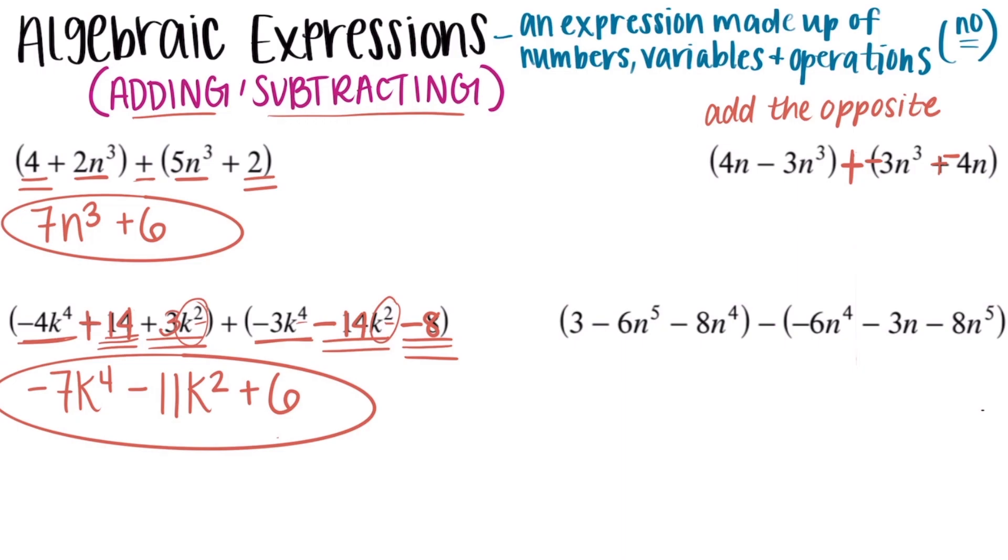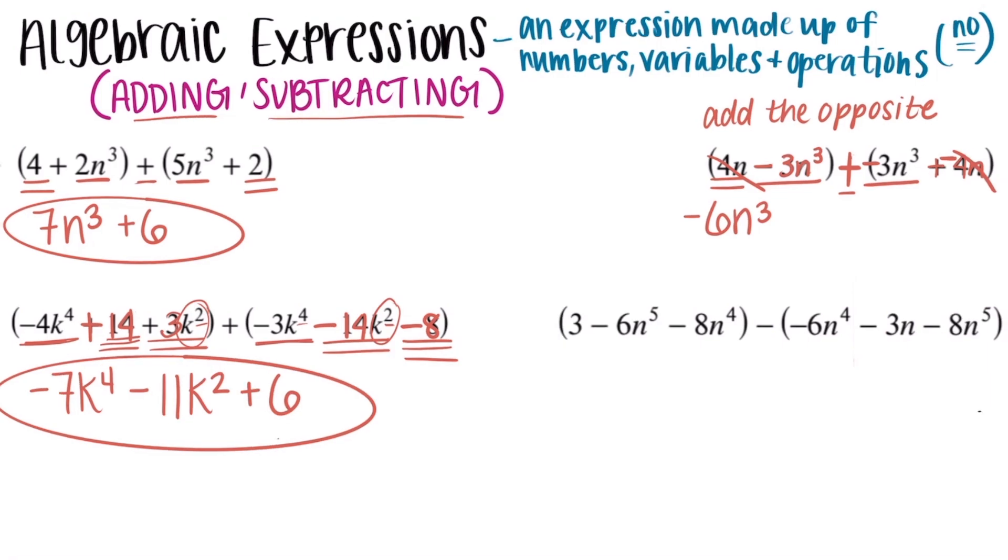Then from here, we just do it exactly like how we did those last two. We combine our like terms. So we have a negative 3n to the third plus a negative 3n to the third. So combining two negatives, you're going to add those up. Negative 3 plus negative 3 is negative 6. And then their like term n to the third. Then moving on to my next term, we have 4n plus a negative 4n or 4n minus 4n. Those are just going to cancel out. They're going to disappear. And that means I'm just left with negative 6n to the third. That's my answer.